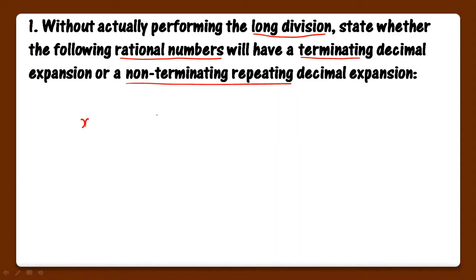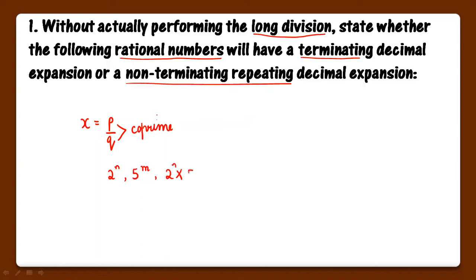Suppose x is the rational number. We can write it in the form p upon q. p aur q yahan pe co-prime numbers hone chahiye — jinका HCF 1 hota hai. Toh agar hum denominator ka prime factorization karein, aur wo 2 ki powers ki form mein, ya 5 ki powers ki form mein, ya phir 2 aur 5 dono ki powers ki form mein aaye, toh rational number ka decimal expansion terminating decimal expansion hoga. Nahi toh wo non-terminating repeating decimal expansion hoga.